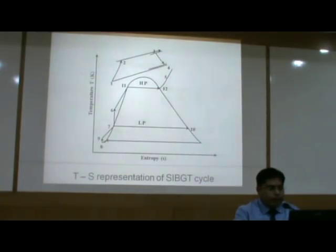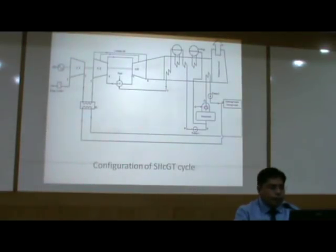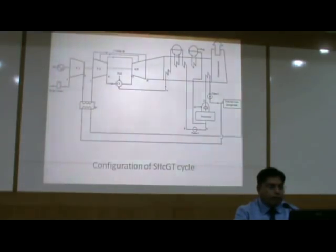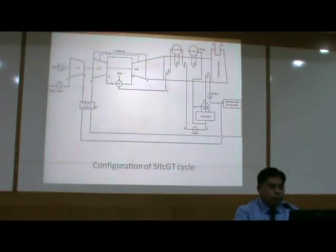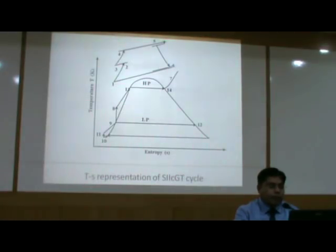This is the T-S diagram representing the SI-DGT cycle. Another configuration uses intercooling, known as SI-ICGT — the steam injected intercooled gas turbine cycle. As we know, intercooling reduces compressor work, and in order to gain the advantage of this, intercooling is introduced in this particular configuration. This is the T-S representation of the steam injected intercooled gas turbine cycle.